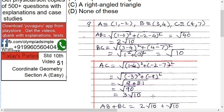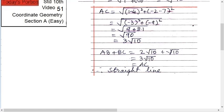Suppose if you add these two, AB + BC, you get 2√10 + √10, right? AB + BC equals 3√10, but that is AC, right? That's why these three points are collinear.